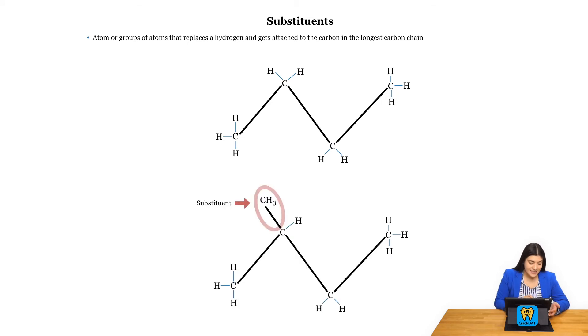And if I were to add a substituent, essentially what's happening is I am removing a hydrogen and adding a separate carbon chain or a separate atom or groups of atoms or substituent to that carbon in the longest carbon chain.